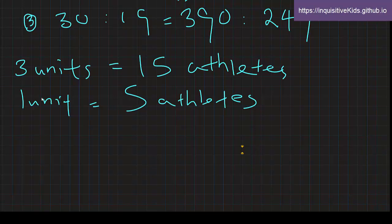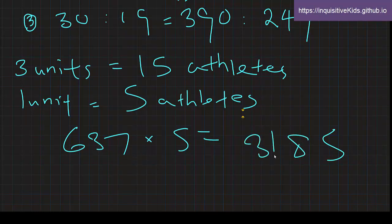So 390 plus 247 is equal to 637 times 5. And we get 3,185 athletes. So 3,185 is our final answer.